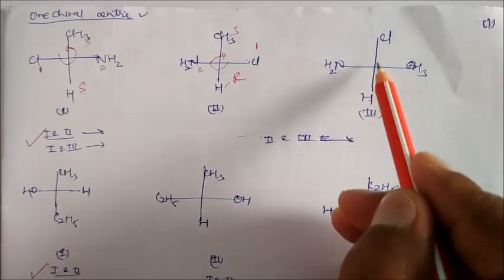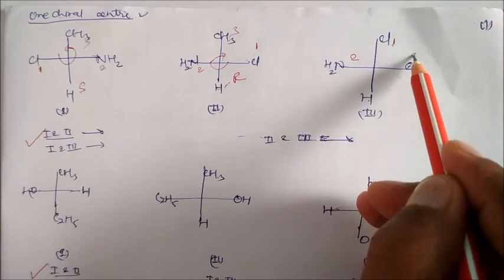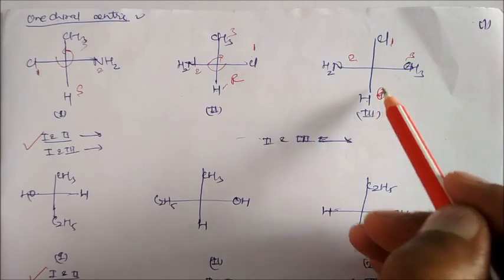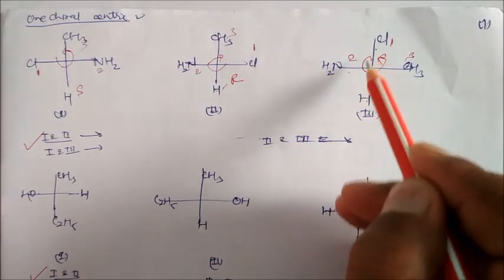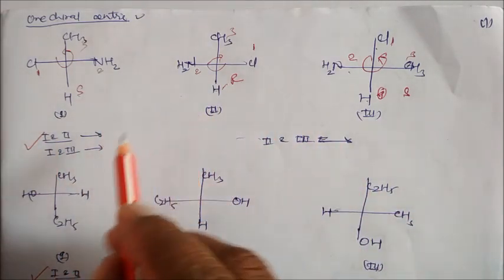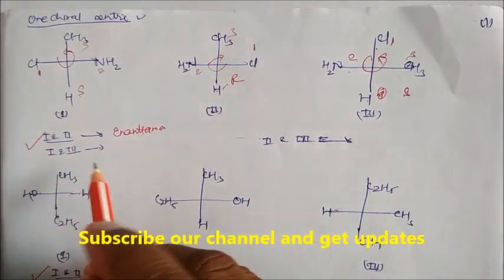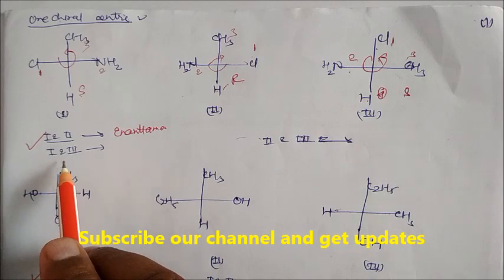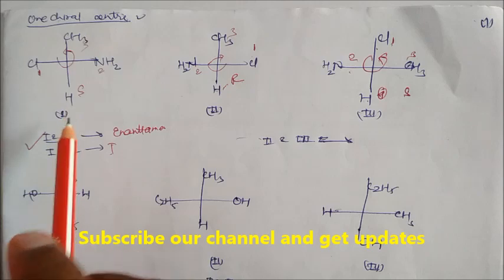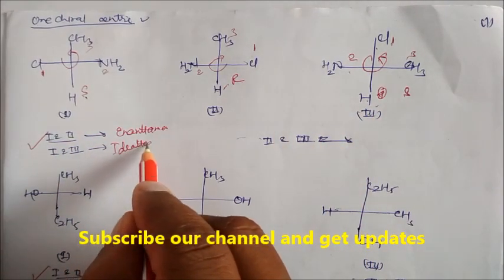Similarly here, hydrogen is again on the vertical line. In this case, this is your 1, this will be your 2, this will be your 3, and the last group is 4th. This is the lowest priority on the vertical line. So it will be 1, 2, 3 like this — anticlockwise — this is your S. So in this we can see compounds 1 and 2. Compounds 1 and 2 are your enantiomer, because as per the definition it is S and R. While you take 1 and 3, this is your identical — so 1 and 3 is identical because all the groups are the same and it is also S and S. So this is your identical, or another name is your homomer.